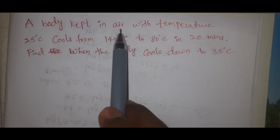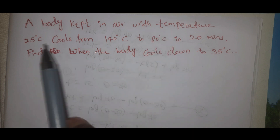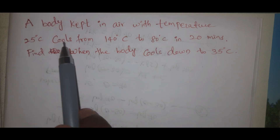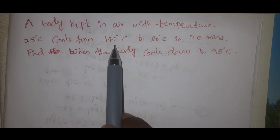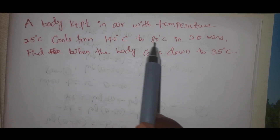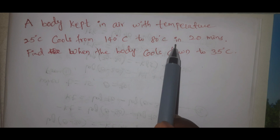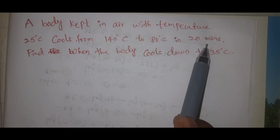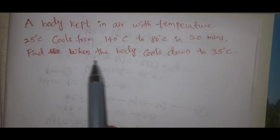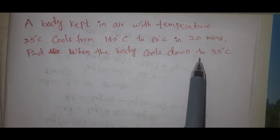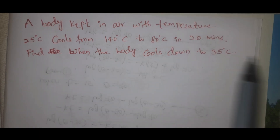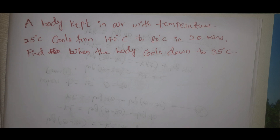A body kept in air with temperature 25 degrees centigrade cools from 140 degrees centigrade to 80 degrees centigrade in 20 minutes. Find when the body cools down to 35 degrees.